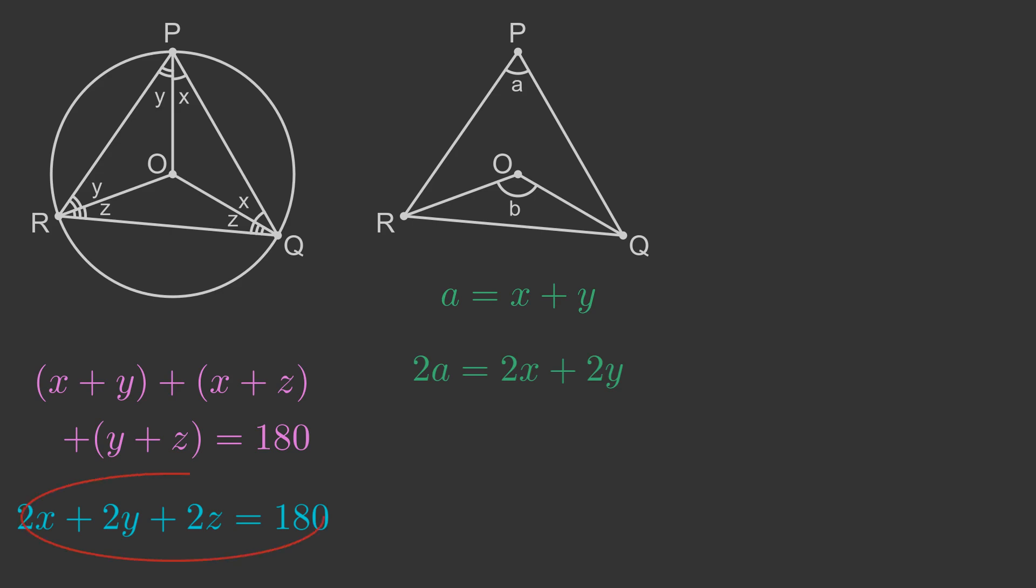We can use the previous equation 2X plus 2Y plus 2Z equals 180. Replacing 2X plus 2Y with 2A gives 2A plus 2Z equals 180.